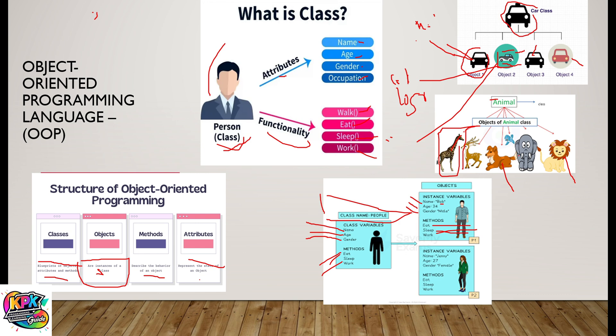You could also have another instance called Jesse. Jesse has age, name, and gender — with gender being female — as attributes of the class people. Jesse is an object of the class people, and the object has those attributes. Jesse can eat, sleep, and work. So that is it for classes and the concept of object-oriented programming languages.